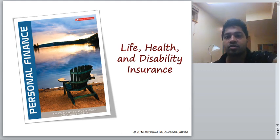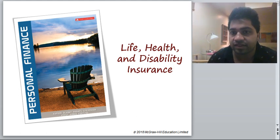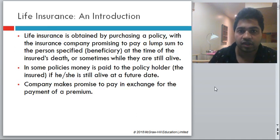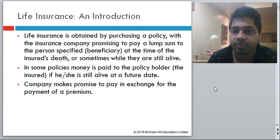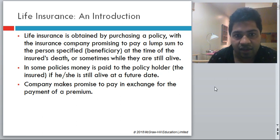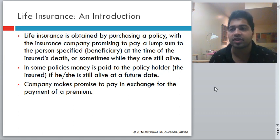Hello everyone and welcome to this recording. In this chapter we would be discussing about life, health and disability insurance. Life insurance is obtained by purchasing a policy with the insurance company promising to pay a lump sum to the person specified as beneficiary at the time of the insured's death, or sometimes while they are alive. In some policies, money is paid to the policyholder if he or she is still alive at a future date. The company makes a promise to pay in exchange for payment of premium.